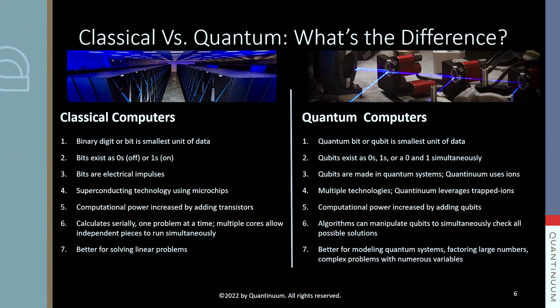So in the traditional classical computer, including your laptop, your phone, you have this idea of bits, these transistors that are either a zero or a one. And in quantum computers, you have the same kind of idea, but they're qubits, quantum bits. But again, they could be a zero or a one or anything in between.